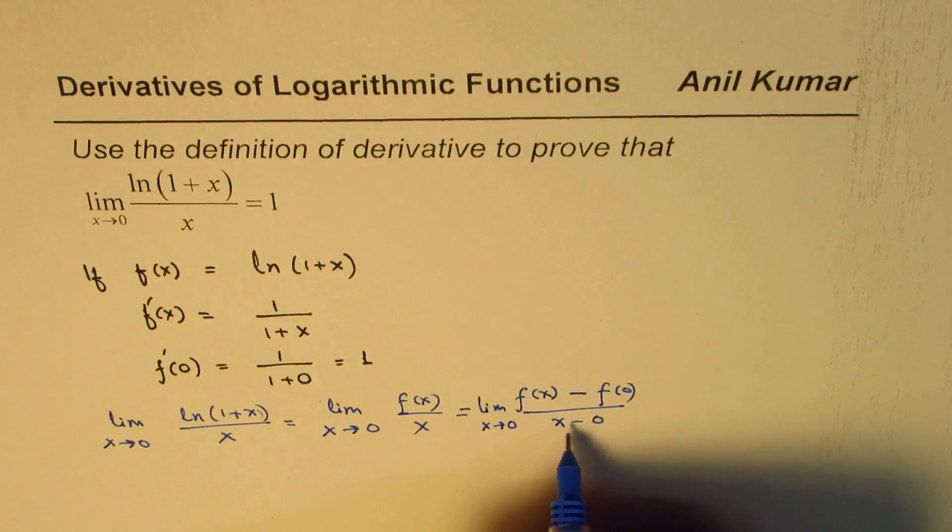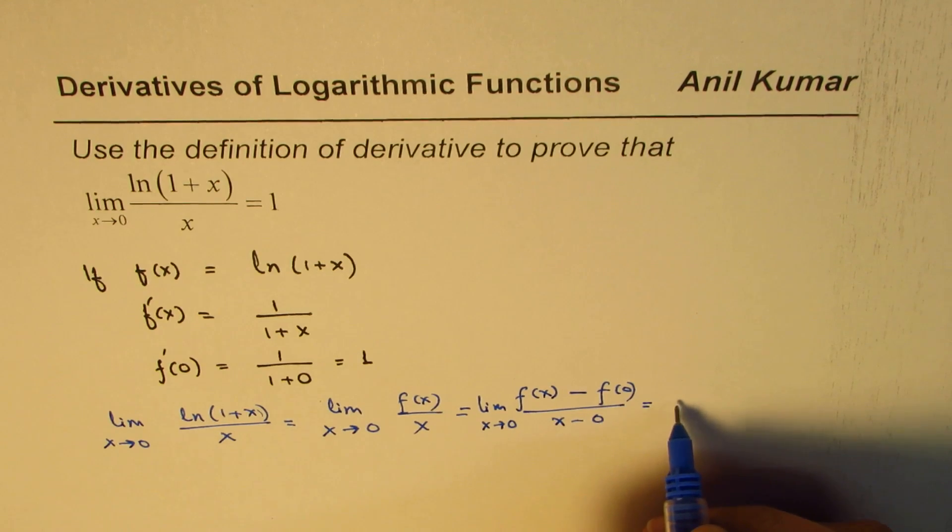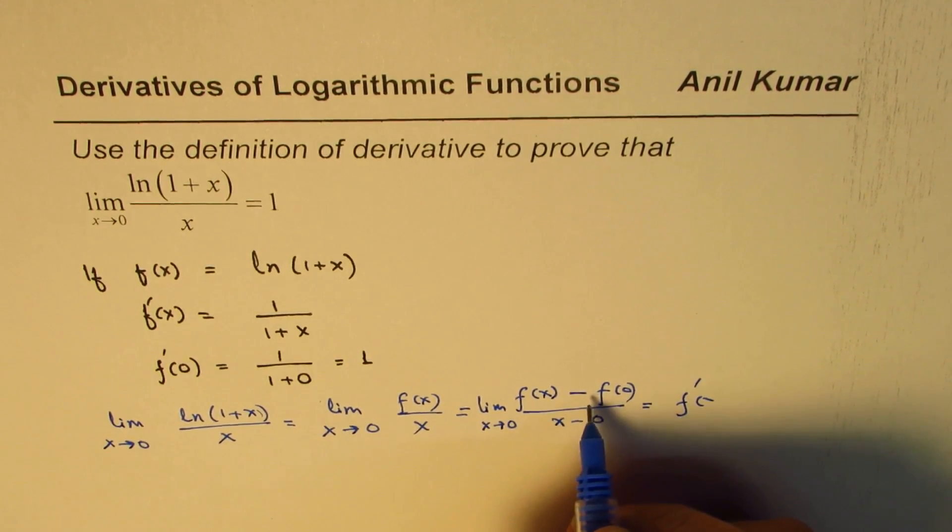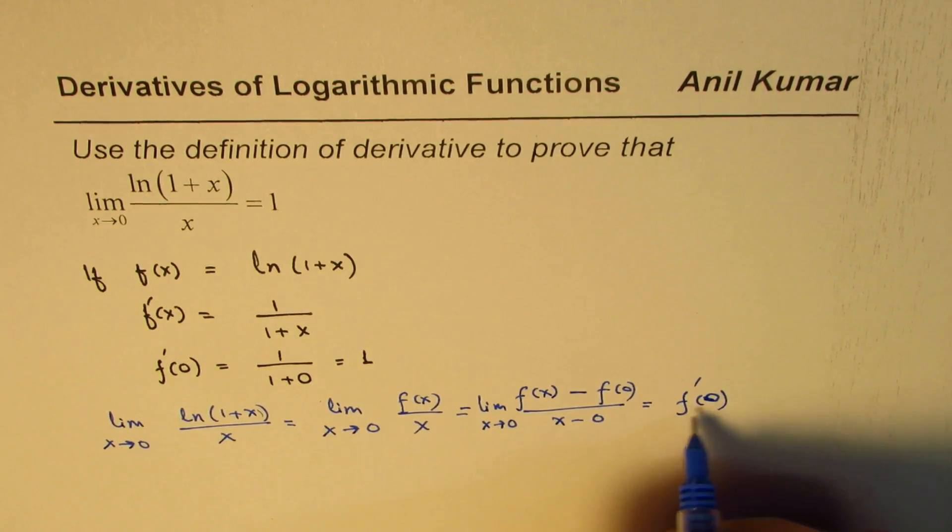So at a point, this is the definition of the derivative, we could write this as the derivative of the function f(x) at 0, derivative of 0.